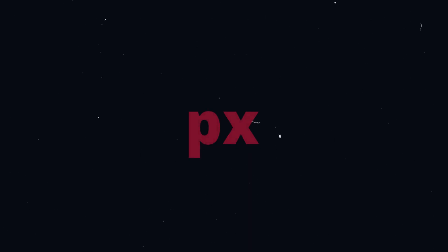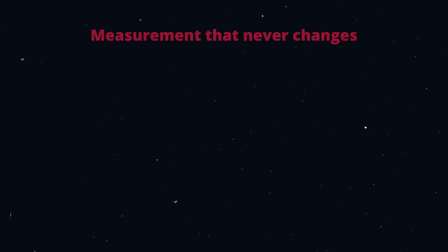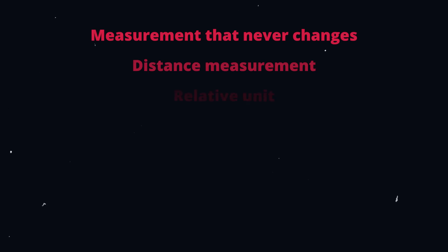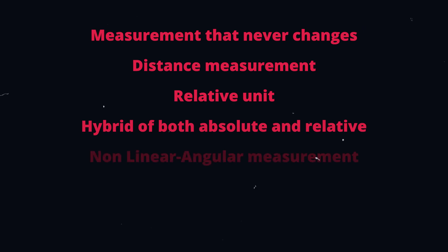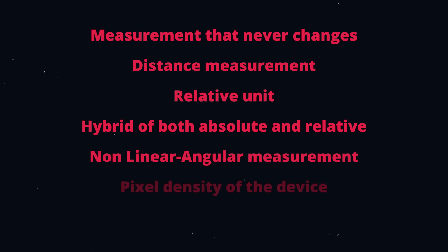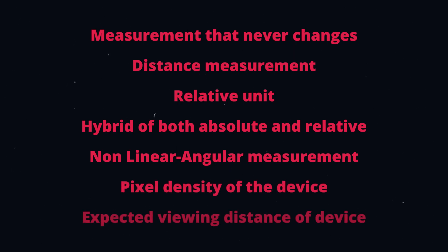You might think the pixel unit is the easiest to understand, but actually it's the most complicated unit of all. There's a lot of confusion about it. Some people think it's a measurement that never changes, some think it's a distance measurement, some think it's a relative unit despite being defined as an absolute unit, and some think it's a hybrid of both absolute and relative. Others believe it's a non-linear angular measurement or relative to pixel density or expected viewing distance. So which one is it?